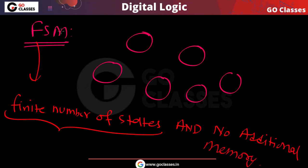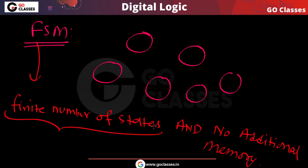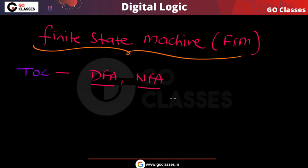Finite state machine means any type of machine you can create that has finite number of states and there is no additional memory. Every state itself is a memory - every state can remember something. So the definition is: finite number of states and no additional memory.